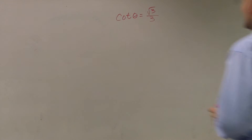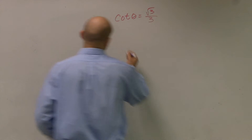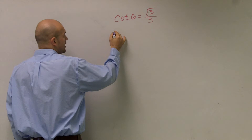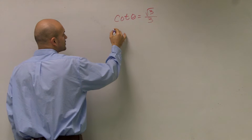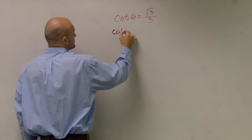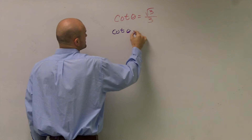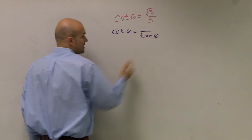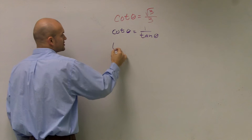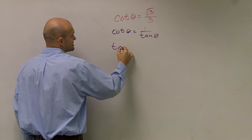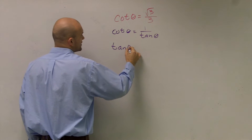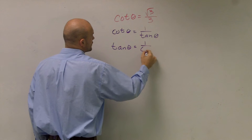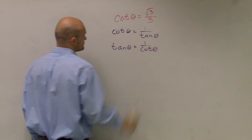So you guys know cotangent. We said cotangent of theta is the same thing as 1 over tangent of theta. We also took a look at tangent of theta, then, is equal to 1 over cotangent of theta.